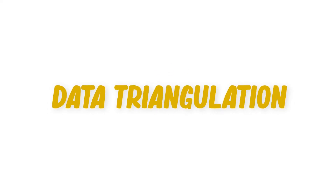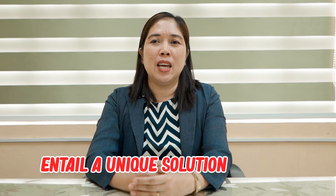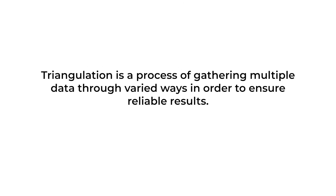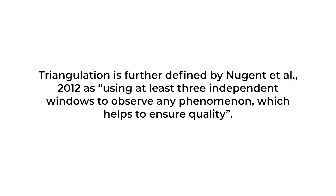Data triangulation: Action research problems are most of the time unique to every class because each class is composed of learners with a unique combination of traits and characteristics. That uniqueness of the phenomenon in your class would also entail a unique solution. There is no single perfect data collection process that can be prescribed in order to end with reliable and valid data. However, the triangulation of data would aid you in looking into the consistency and accuracy of your analysis. Triangulation is a process of gathering multiple data through valid ways to ensure reliable results. It is further defined by Nogent et al. in 2012 as using at least three independent windows to observe any phenomenon, which helps to ensure quality.